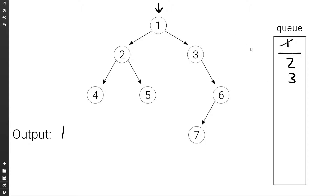Then we go back to the queue and we set current to the front of the queue. This time it is a delimiter, so of course we pop it, and this indicates that we're done with the current level, so we need to print a new line. The nodes that are in the queue are those of the next level, so we add a delimiter to indicate that when we're done with them, we want to print another new line.